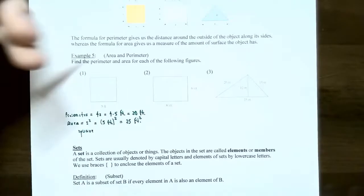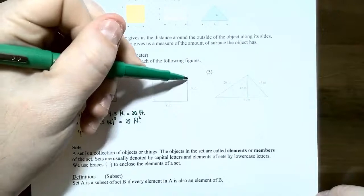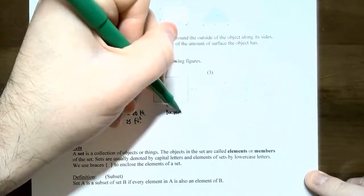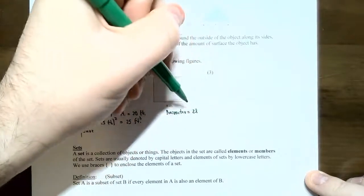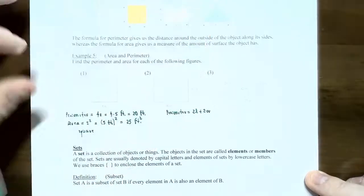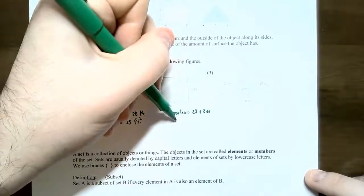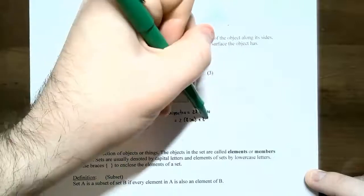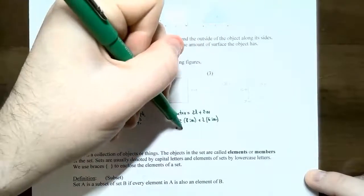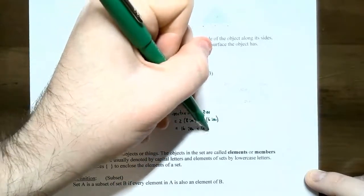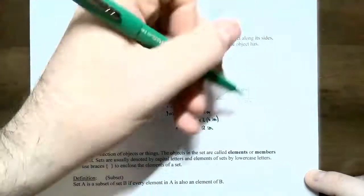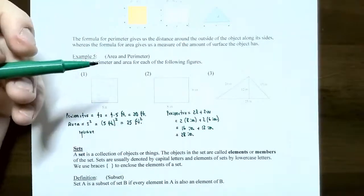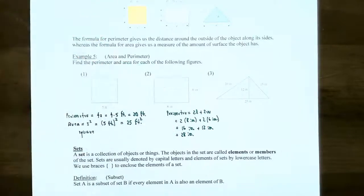Let's move on to the rectangle, number two. This rectangle has a length of eight inches and a width of six inches. The perimeter is two times the length plus two times the width — the distance all around the rectangle. So you have two times eight inches plus two times six inches. Two times eight is 16, plus two times six is 12. So 16 inches plus 12 inches gives you 28 inches. Perimeter just means distance — you're not going to have square units.